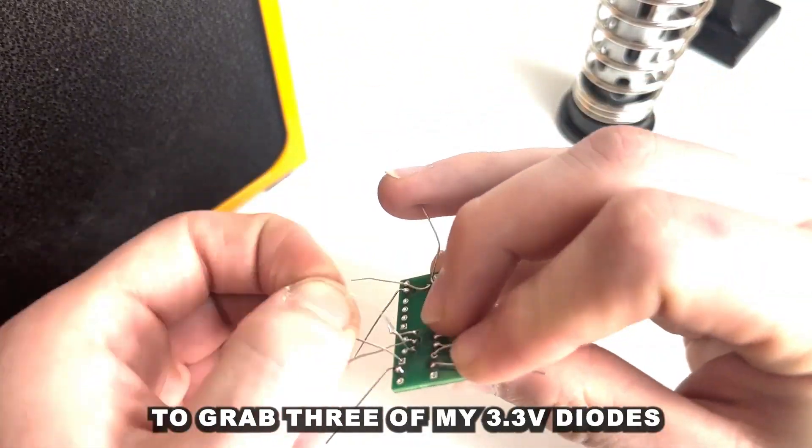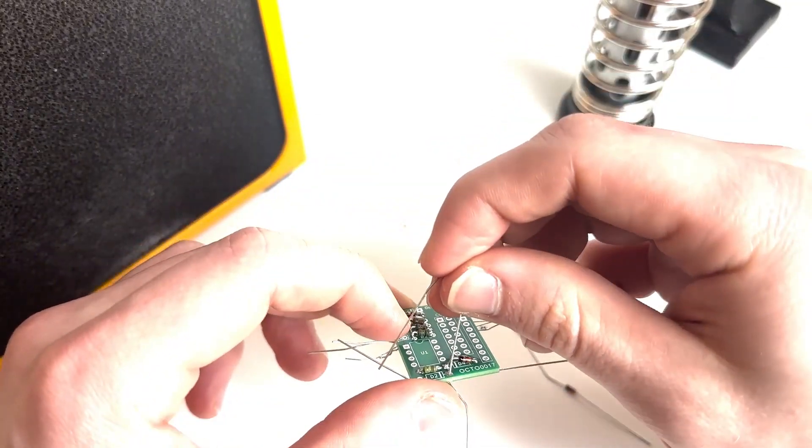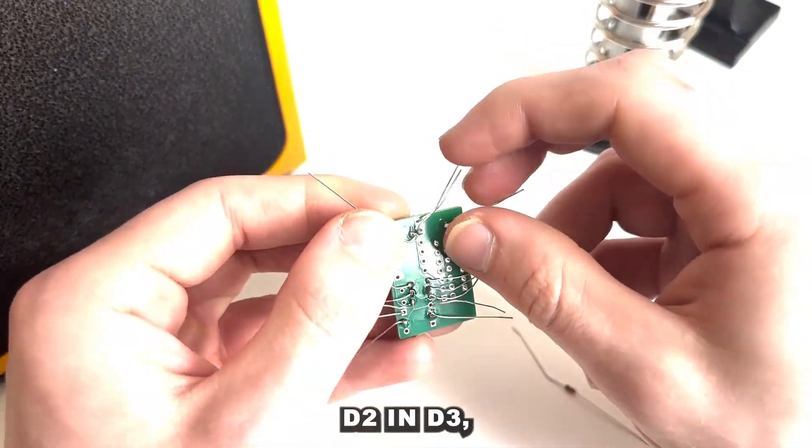And then I'm going to grab three of my 3.3V diodes and insert them into D1, D2 and D3.